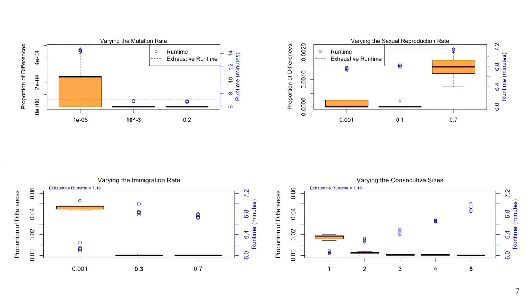For immigration rate, we also chose 0.001. And for the consecutive size, we chose the optimal value of 2.